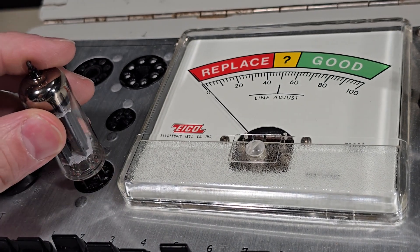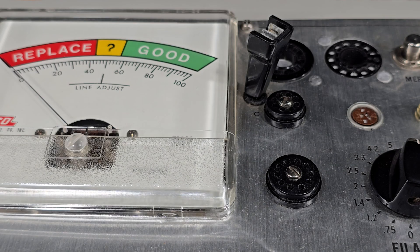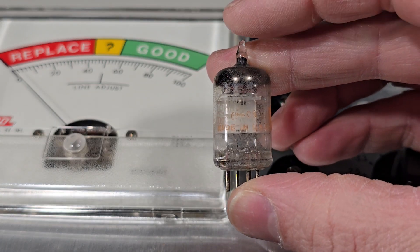Now we can easily insert the tube into the proper nine pin socket. Here's another example using a miniature seven pin tube.